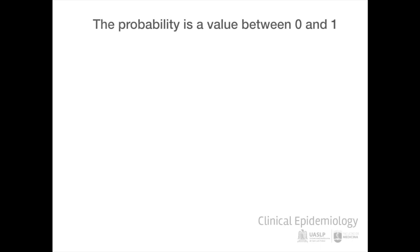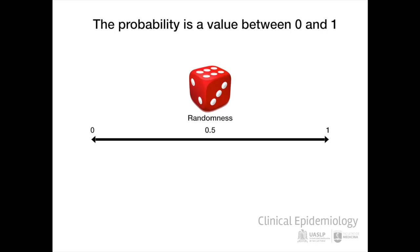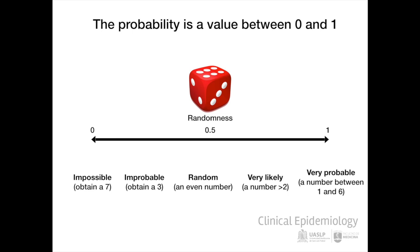This probability is located within a range between 0, which is impossible, and 1, which is certainty, passing through intermediate values, where 0.5 or randomness is located. A good example is the result that is obtained when rolling a die, where there are impossible values, such as getting a number 7, random values, that you get an even number, or values of total certainty, like getting any number between 1 and 6.